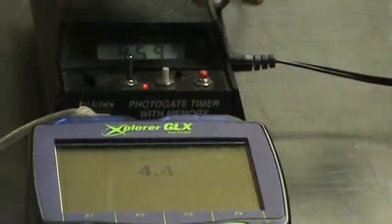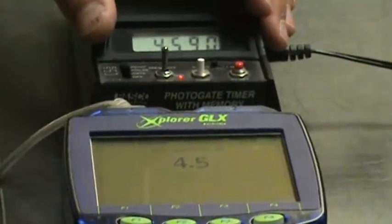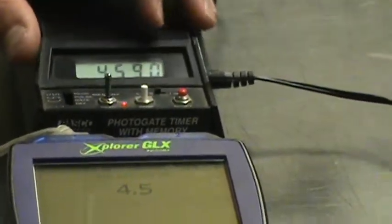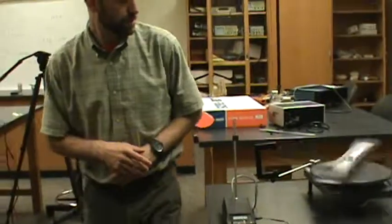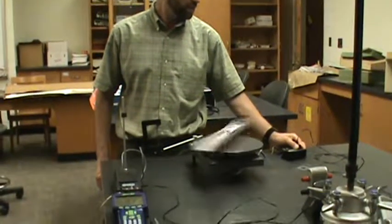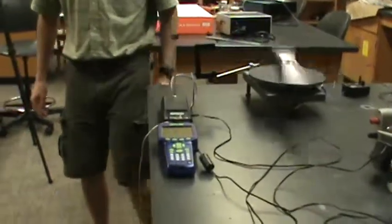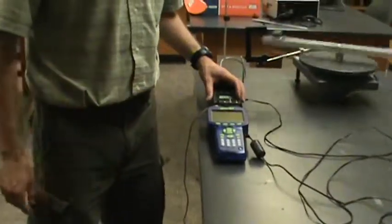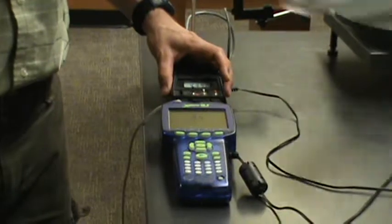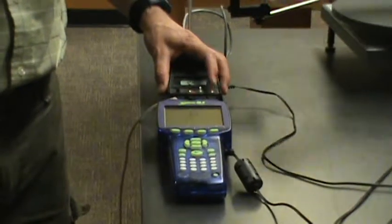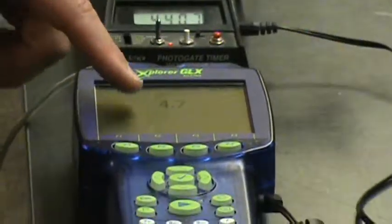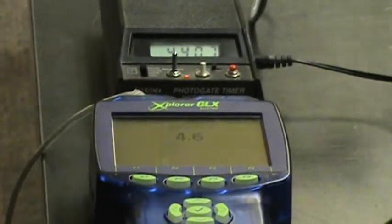0.4599, sorry, let me try that again. 0.4590 and 4.5 is our tenth data point. 0.4407 and 4.7 is our eleventh data point.